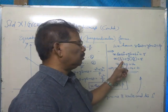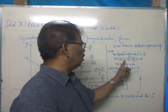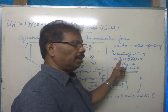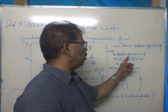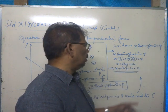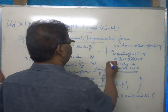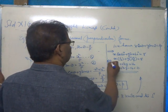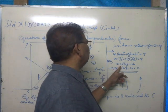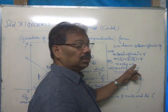Now, cos 60 is half, x into one by two, plus y into sin 60 is root three by two, y into root three by two is equal to eight. We shall multiply it by two. We get x plus root three y is equal to sixteen.